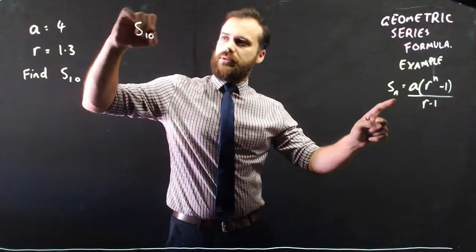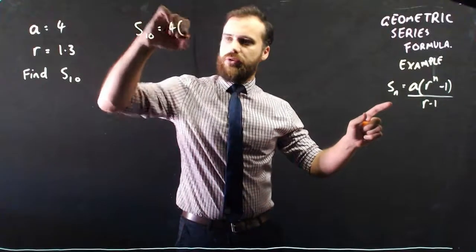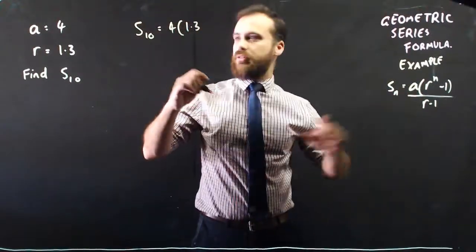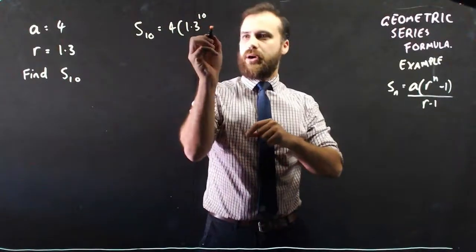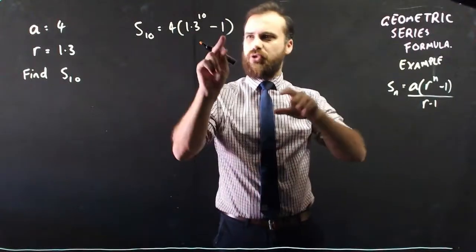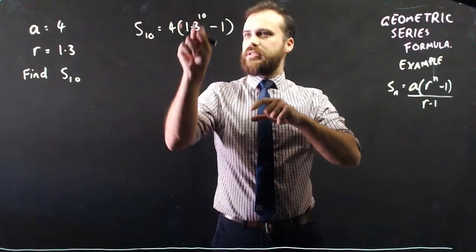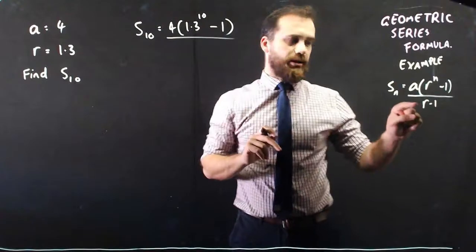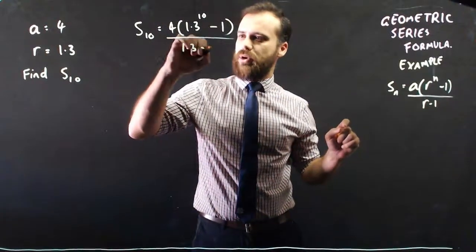So sum of the first 10 terms is equal to the first term 4 times r, the common ratio, to the power of n, which is 10, minus 1. Be careful here. It's not like the sequence formula where it's n minus 1 as a power. It's r to the n and then minus 1 on the n. Okay, and then finally it's r minus 1, so 1.3 minus 1.